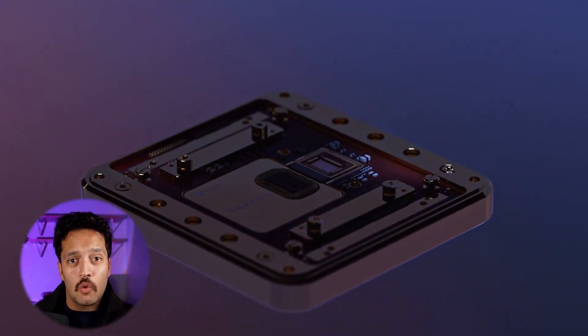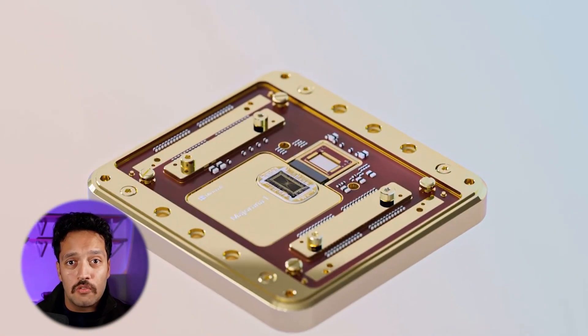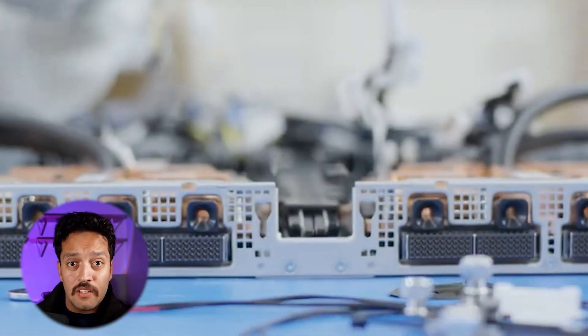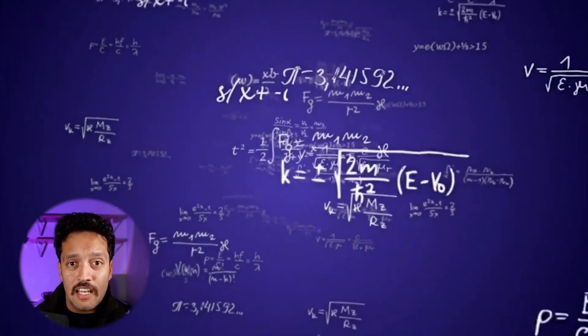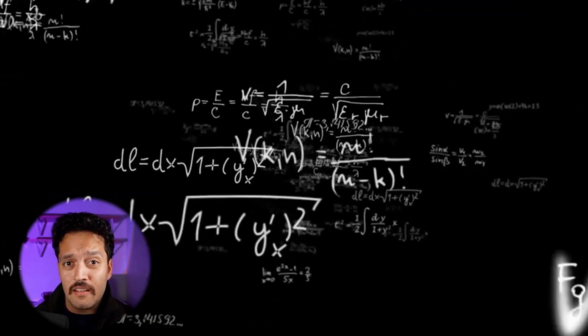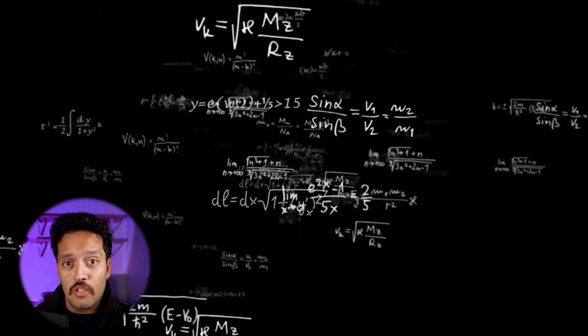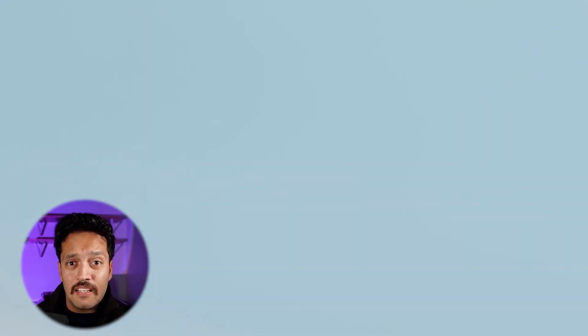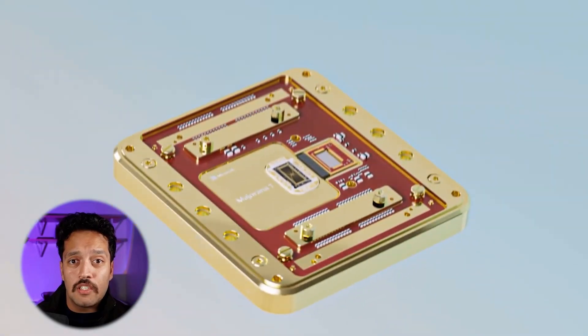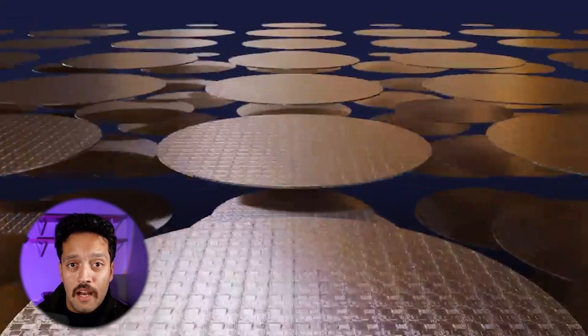Because once quantum computers consistently achieve real-world advantage, they could threaten every encryption system protecting global communications, financial transactions, and military secrets. If governments are staying unusually quiet about their quantum progress, that silence might be the loudest signal that something genuinely transformative is happening behind closed doors.